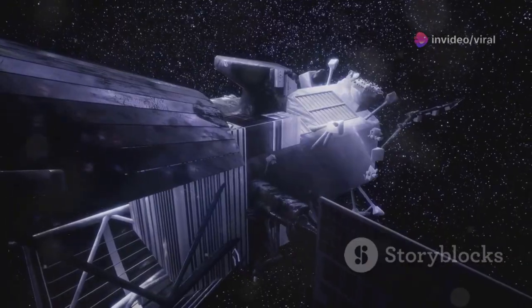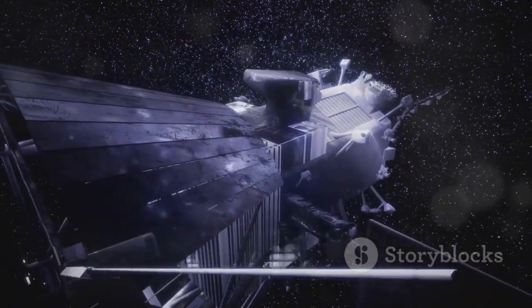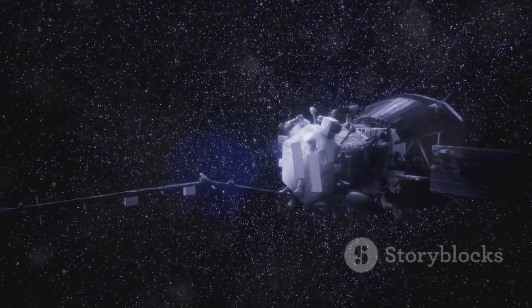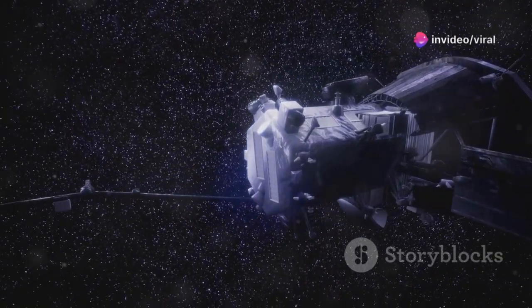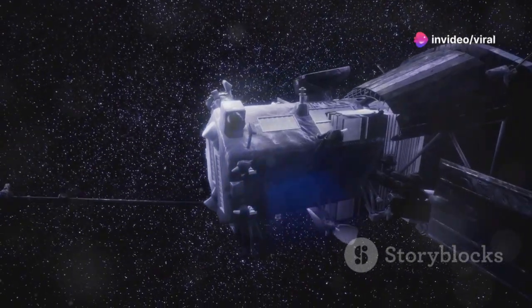That's why Webb is protected by a 5-layer sun shield, which blocks out the heat and light from the Sun, Earth, and Moon, cooling the telescope to a frigid minus 233 degrees Celsius. This engineering marvel allows Webb to see what no other telescope can.